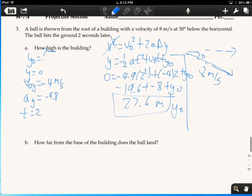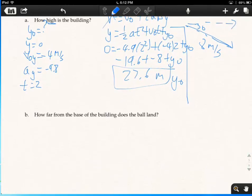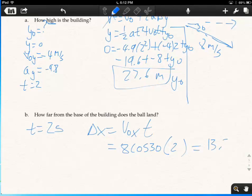How far from the base of the building does the ball land? Well, now we know our time, t equals 2 seconds. And so we're going to just say delta x equals v naught in the x direction times t. So this equals 8 times the cosine of 30 degrees times the 2 seconds. So 8 cosine 30 times 2 is 13.9 meters.